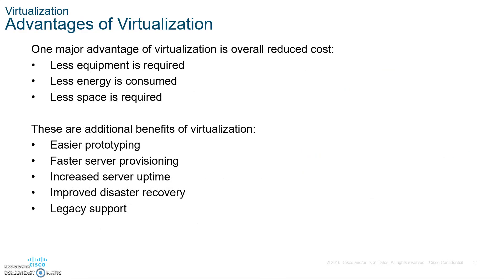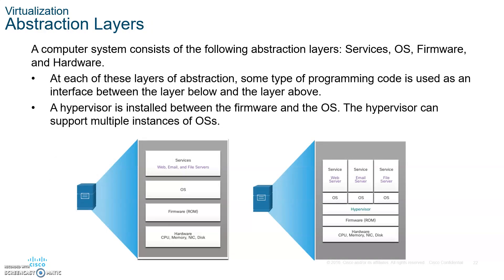Please write down the advantages of virtualization: less equipment is needed, less energy is used, and less physical space is required. A computer system consists of the following abstraction layers: services, OS, firmware, and hardware. The hypervisor sits in the middle, separating the hardware and firmware from the services and OS — that's where the hypervisor comes in, allowing your services and operating system to communicate with the firmware and hardware on your device.